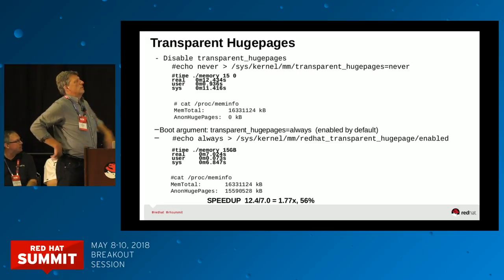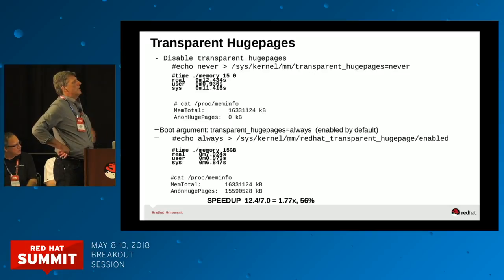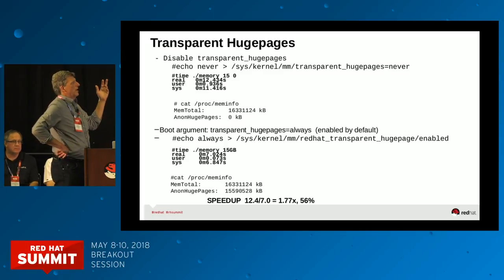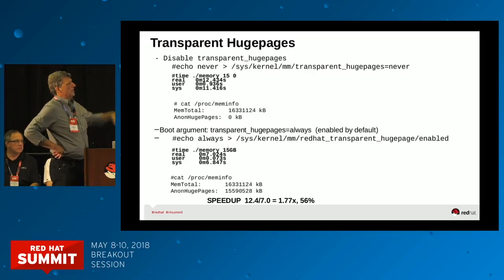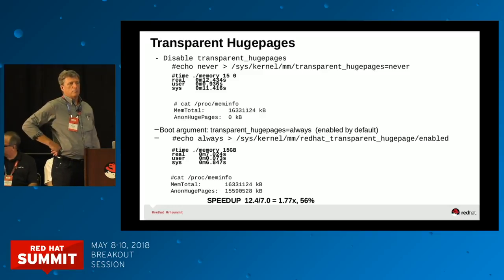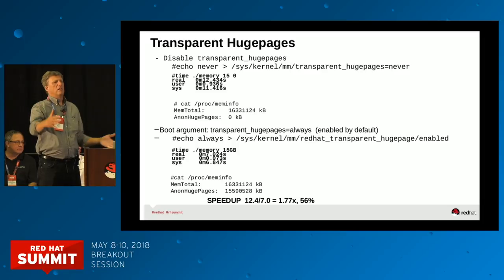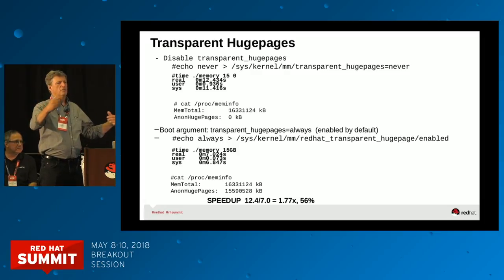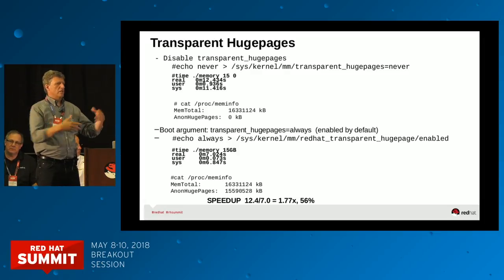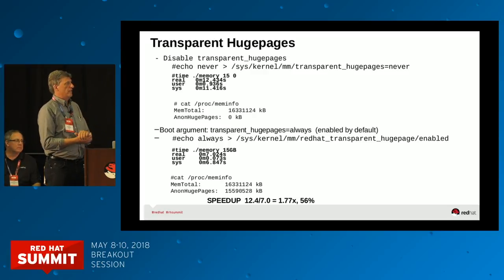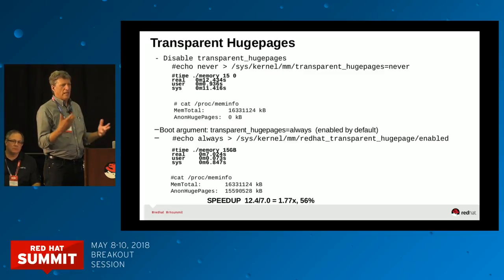This shows the performance difference. If you shut off THP and run a memory test program it takes about 12 seconds. If you turn it back on it runs in about 7 seconds — so you get about a 56% performance boost. There are times when transparent huge pages is the wrong thing to do: if you have a large sparse virtual address space, an application with a very large address space that touches very small random places in there. We have TuneD profiles that tune for this — they'll shut THP off because it'll instantiate 2 megabytes when it only needs a couple of bytes.